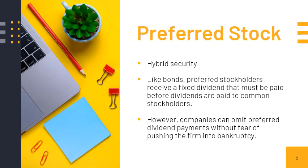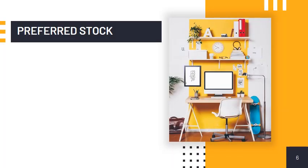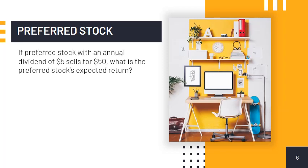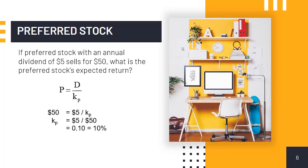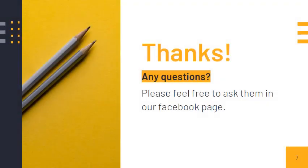Just like common stocks, preferred stocks also do not guarantee dividends. Say that we have a preferred stock that pays a fixed dividend of $5 dollars and sells for $50 dollars — how much is the required rate of return? The formula is similar to the constant growth formula except that we don't have a growth rate. Using this formula, the required rate of return is 10 percent. That ends our video lecture on stock valuation. I will entertain your questions on our Facebook page and during our live meetings.